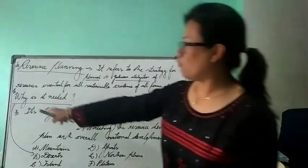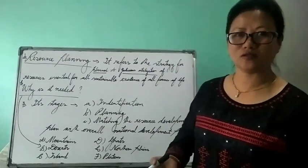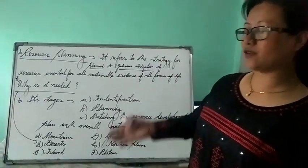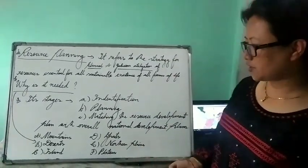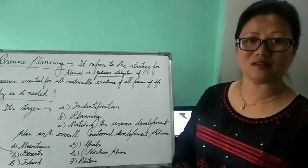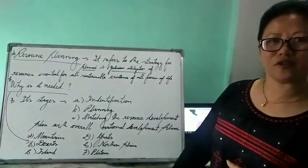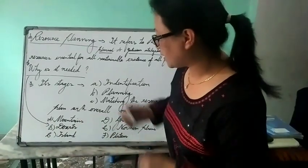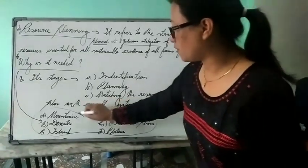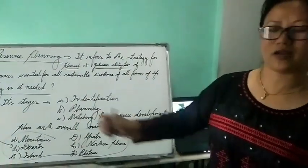So it says that use the resources in a planned way wisely, do not waste, and while using please follow the rules which are made by government so that everybody will get chance to use the resources and in future also there won't be scarcity of resources. Now, why do we need to plan the resources? Since India is very huge with 28 states, let's talk about its physiography.